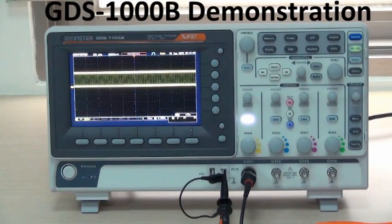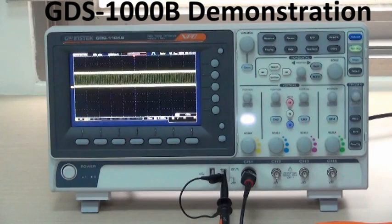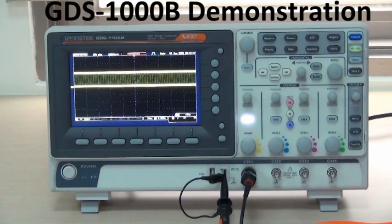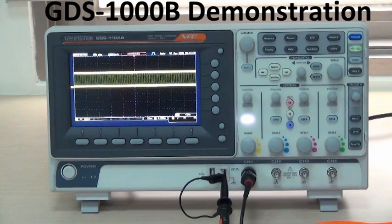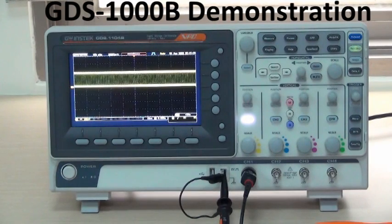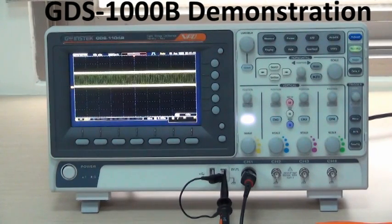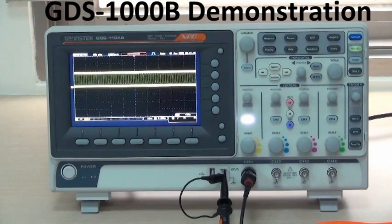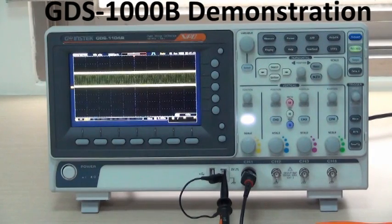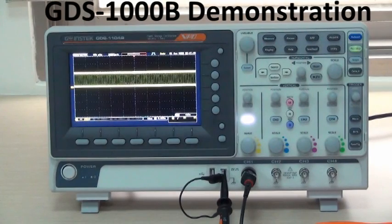Additionally, with waveform update rate of 50,000 waveforms per second, the GDS-1000B series provides users with a tool to tackle challenges of measuring various signals. The robust functional performance makes the economical oscilloscope more colorful and allows entry-level users to substantially enjoy the fun and value brought by tests and measurement, which is precisely the emerging mission of the tests and measurement industry that GW Instek works relentlessly to achieve.